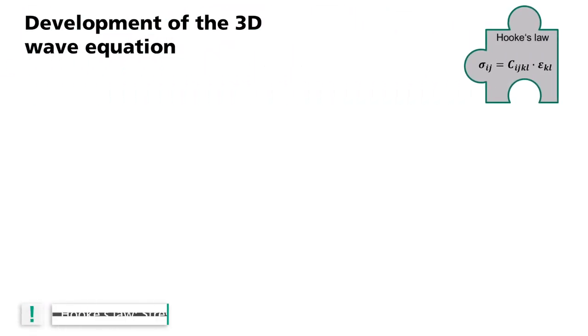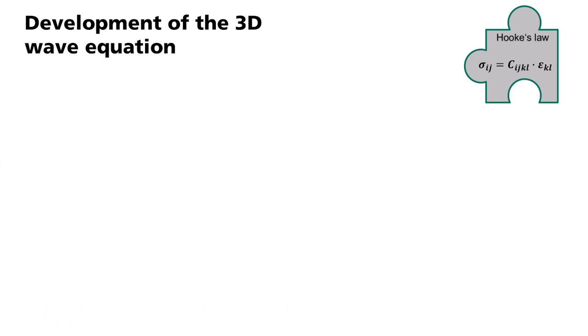For this, we use Hooke's law. It describes in general how stress deforms a physical body. Stress sigma ij equals c ijkl times deformation epsilon kl. Sigma and epsilon are tensors. They describe stress and deformations in 3D. C is a fourth-order tensor and describes how stresses are transformed into deformation.